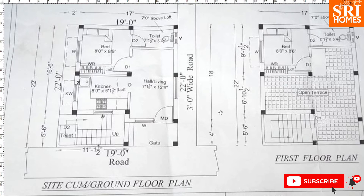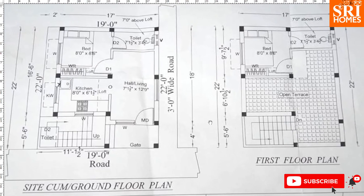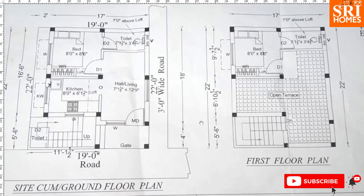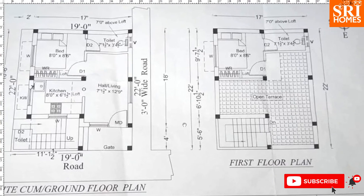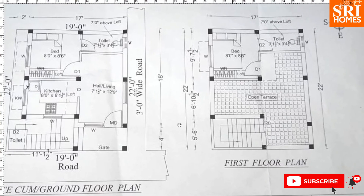Next, we have a bedroom measuring 8.86 feet. Here we have an attached bathroom of 3 by 4 feet. We also have a common bathroom space.